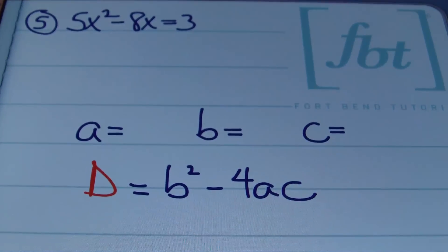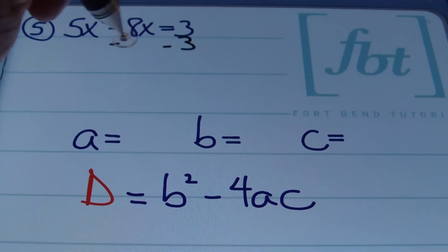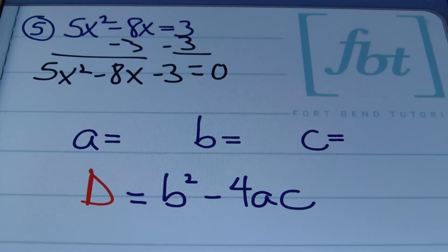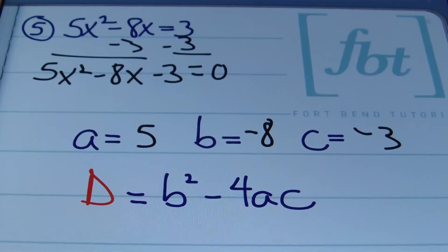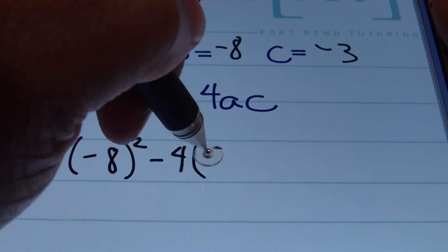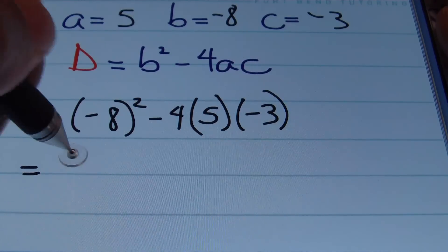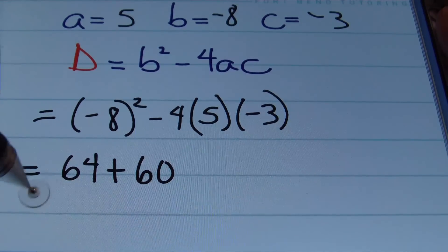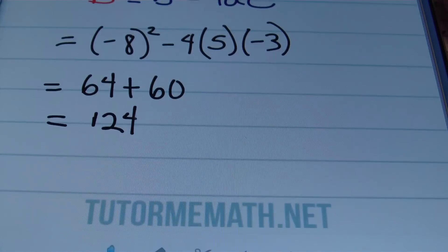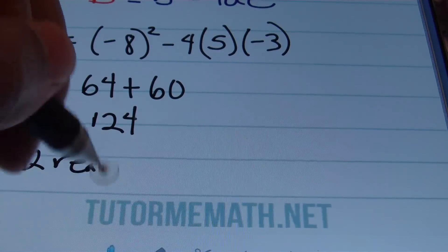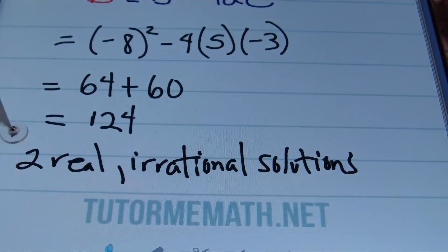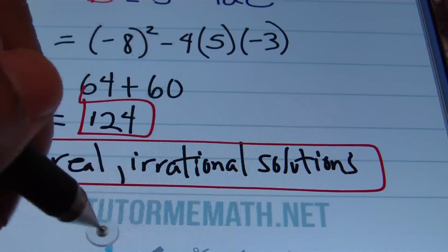In example five we have 5x squared minus 8x equals 3. Subtracting 3 from both sides gives 5x squared minus 8x minus 3 equals zero, so a equals 5, b equals negative 8, c equals negative 3. Plugging in: negative 8 squared minus 4 times 5 times negative 3 gives 64 plus 60, which equals 124. Since 124 is a positive number that is not a perfect square, we end up with two real irrational solutions.